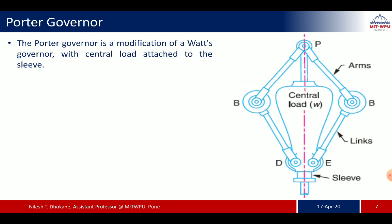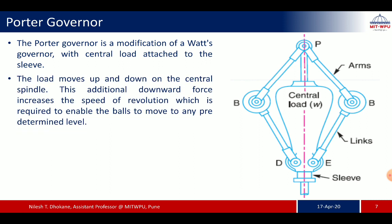The Porter governor is a modification of the Watt governor with a central load attached to the sleeve. The load moves up and down on the central spindle as per speed variation. This additional downward force increases the speed of revolution required to enable the balls to move to any predetermined level.